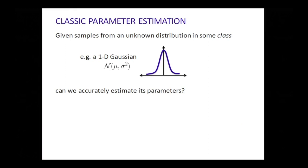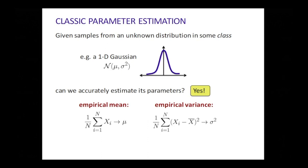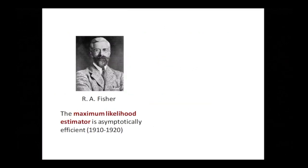The answer is of course you can — there are really simple ways to do this. All you have to do is take a bunch of samples x1 through xn, take the empirical mean — that's going to converge very quickly to the true mean mu — and you can take the empirical variance. These two statistics are examples of a more general paradigm which started with the work of Fisher: maximum likelihood estimation, trying to find the parameters which maximize the chance of generating the samples you were given.